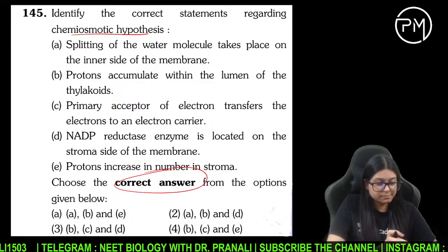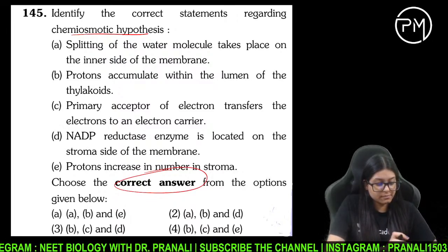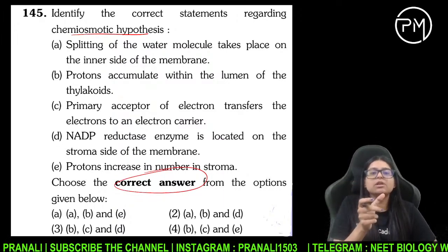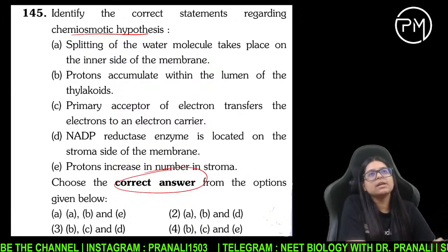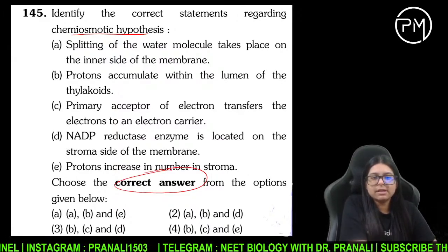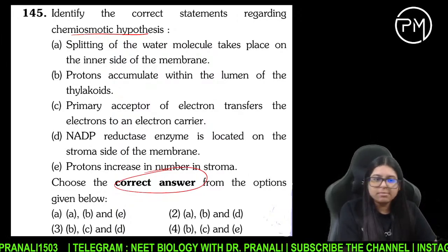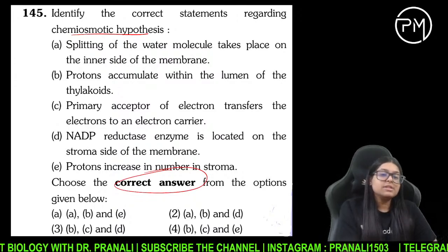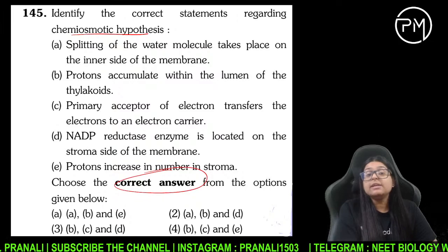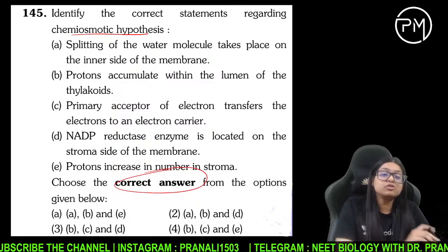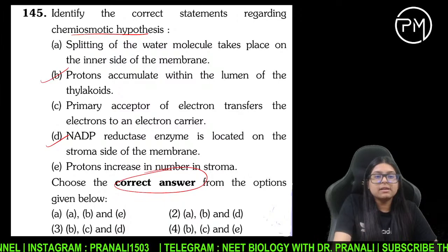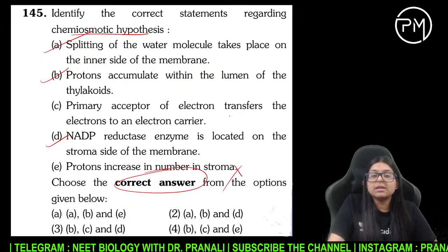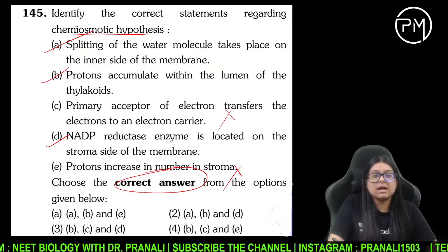Correct answer about chemiosmotic hypothesis kya hai? Splitting hoti hai water molecule ki inner side of the membrane pe — paani toot ke oxygen aur hydrogen ion banata hai. Proteins kahan ikatthe ho jaate hain — thylakoid ke lumen mein. NADP reductase kahan par hai — stroma side par hai. Answer is ABD.